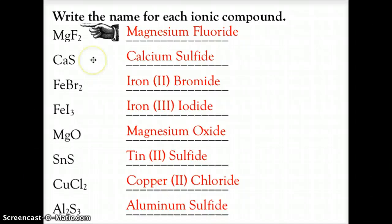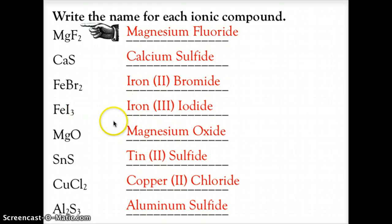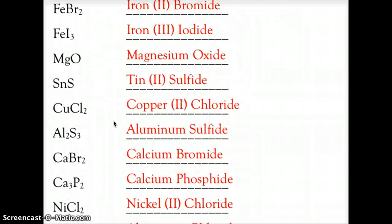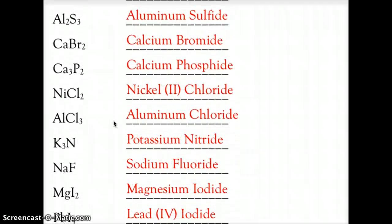Now let's check the naming answers. MgF2 is magnesium fluoride. CaS is calcium sulfide. FeBr2 is iron(II) bromide — bromide is −1 and there are two of them, so iron must be +2. FeI3 is iron(III) iodide — iodine is −1 and there are three, making iron +3. MgO is magnesium oxide. Then: tin(II) sulfide, copper(II) chloride, aluminum sulfide, calcium bromide, calcium phosphide, nickel(II) chloride, aluminum chloride, potassium nitride, sodium fluoride, magnesium iodide, and lead iodide.